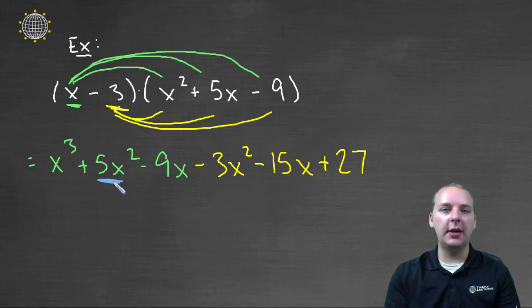So for instance, I have a five x squared and a minus three x squared. Those are like terms. And I have a minus nine x minus fifteen x. I think those are also like terms.